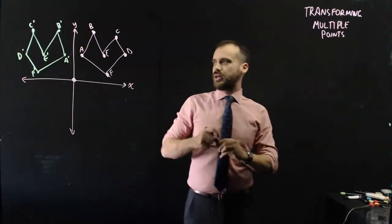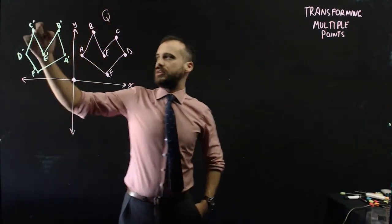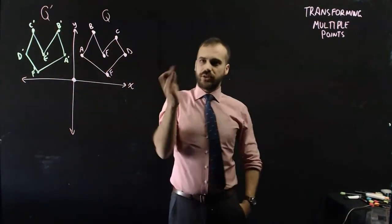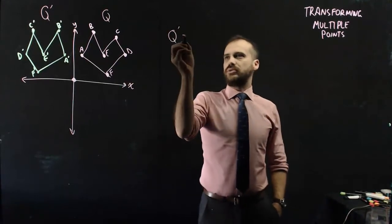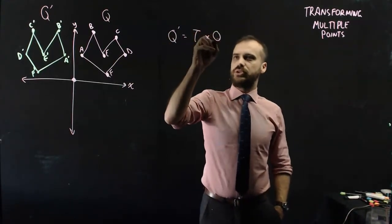So how can I do that? Well, if we call this object Q, and this is obviously the image of object Q, we can create a formula that looks like this. The image of object Q is equal to the transformation matrix times the object Q.